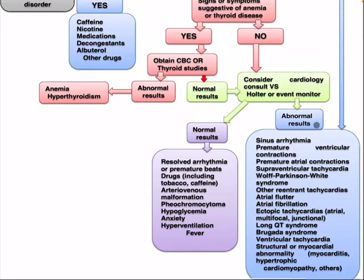If the ECG result is abnormal, a differential diagnosis may include sinus arrhythmia, premature ventricular contraction, premature atrial contraction, supraventricular tachycardia, Wolff-Parkinson-White syndrome, other re-entrant tachycardia, atrial flutter, atrial fibrillation, ectopic tachycardia (atrial multifocal or junctional), long QT syndrome, Brugada syndrome, ventricular tachycardia, structural or myocardial abnormality, myocarditis, and hypertrophic cardiomyopathy.